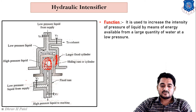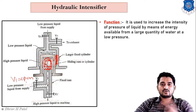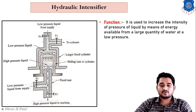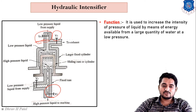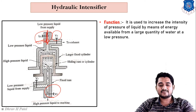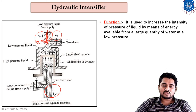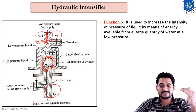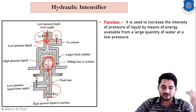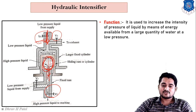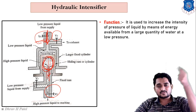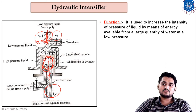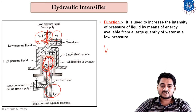Next, V4 valve is opened while V2 and V3 are closed. With lower pressure applied from above, the sliding ram moves slowly in the downward direction. The liquid stored in the sliding ram section moves downward into the fixed ram's smaller cross-sectional area — so the liquid moves from a larger to a smaller cross-sectional area, causing the pressure intensity to increase.